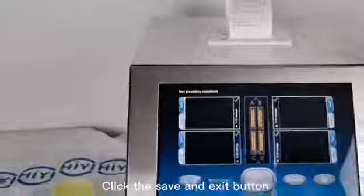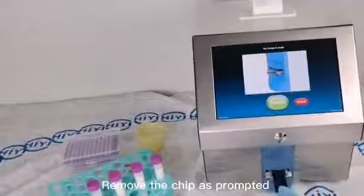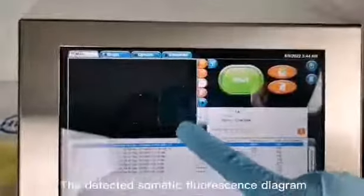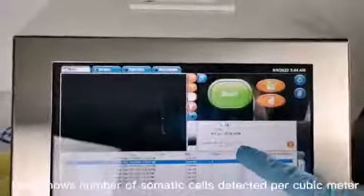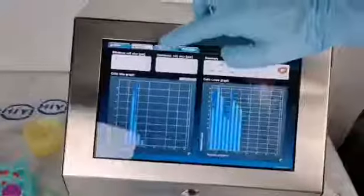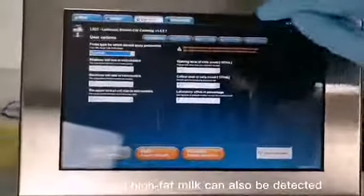Click the save and exit button. Remove the chip as prompted. Click the sample name here, click the continue button again. The detected somatic fluorescence diagram can be seen from the interface. Here shows the number of somatic cells detected per cubic milliliter. We can see the graph clearly. Here we can set dairy product type, somatic cell size, etc. Click on the type of milk to see that in addition to milk, goat milk and half-fat milk can also be detected.